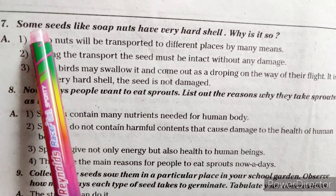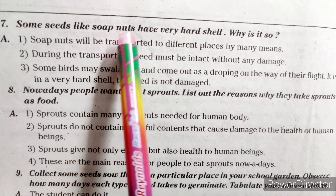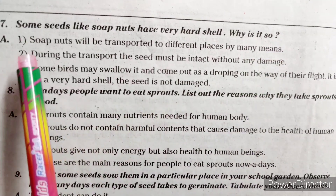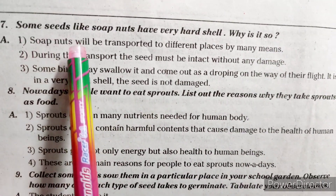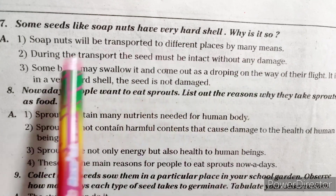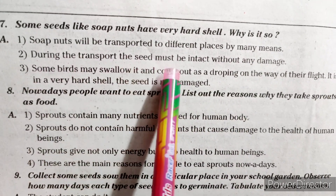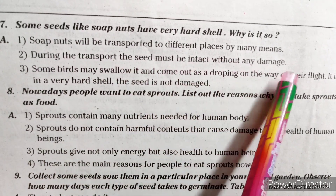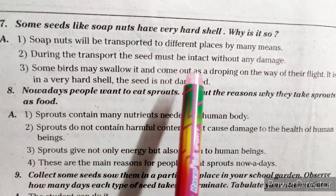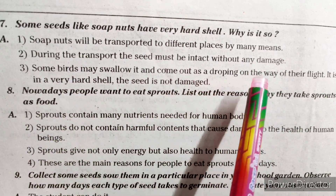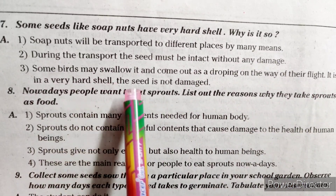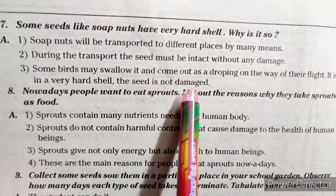Seventh question: Some seeds like soap nuts have a very hard shell. Why is it so? Soap nuts are transported to different places by many means. During transport, the seed must remain intact without any damage. Some birds may swallow the seed and it comes out as a dropping during their flight. Because of the very hard shell, the seed is not damaged.